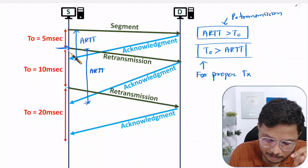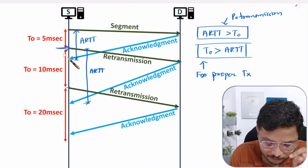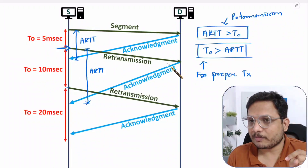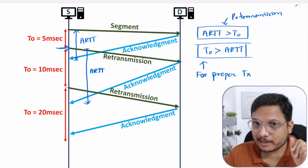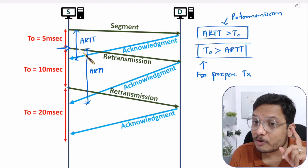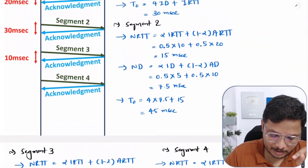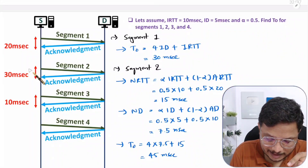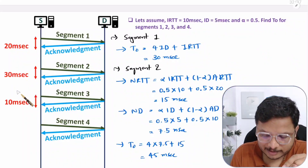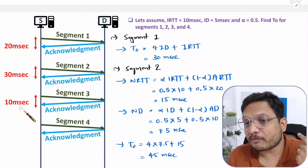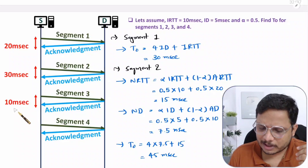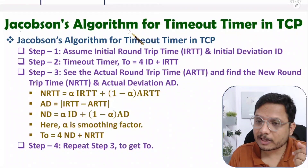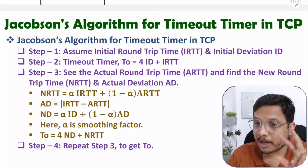If T0 timeout is happening at this instant, at that instant I don't have ARTT. Since I don't have ARTT, I simply double the value of T0 and do retransmission. For dynamic value of T0 as per the algorithm, you do have ARTT. When we are dynamically calculating T0 we use the ARTT of the last segment. If you don't have ARTT of the last segment, only then do you apply Karn's modification; otherwise you follow Jacobson's algorithm or the basic algorithm.